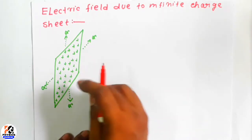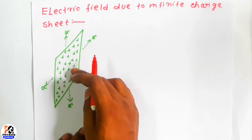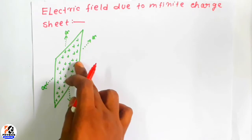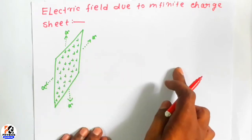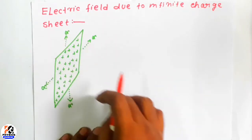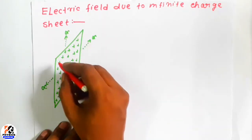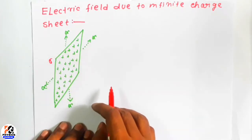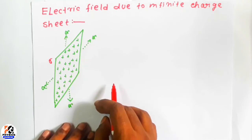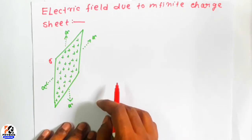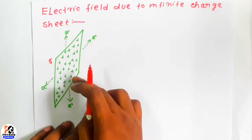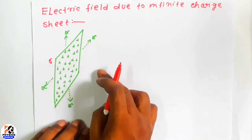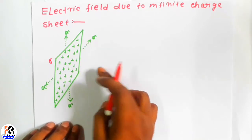Here you can see that this is an infinite plate — I have drawn a rectangular plate facing right toward our direction, and this goes to infinite in every direction. Here the charge density is sigma, that is charge per meter square — it has sigma amount of charge.